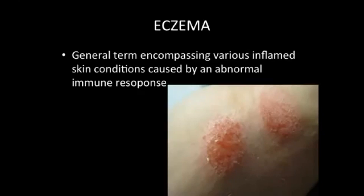Infants can get eczema, typically on their cheeks and face, and they tend to grow out of it over time. When adults get eczema it appears on the elbows, the backs of the knees, or really anywhere on the body, but it is a small localized patch of dry skin.